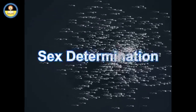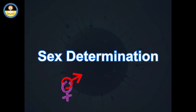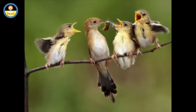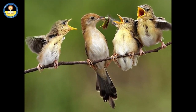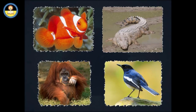Sex Determination. Reproduction is an essential life process, which not only helps in survival of species, but also helps in continuity of that race. During the reproduction process, what determines whether an individual will be a male or a female? In different species, the sex of offspring is actually determined in different ways.